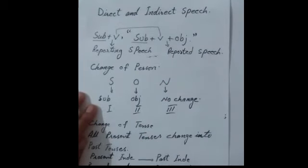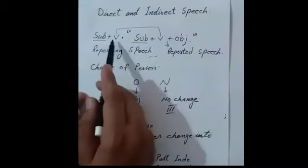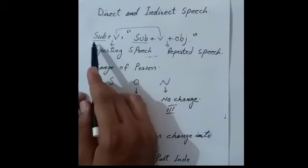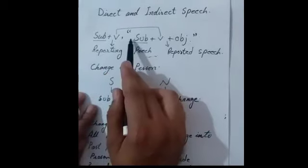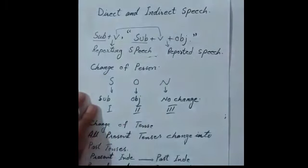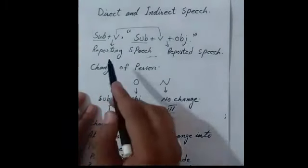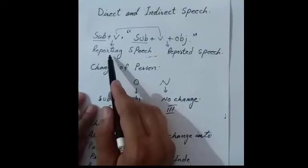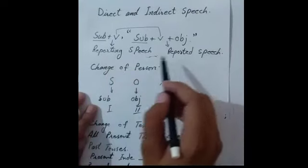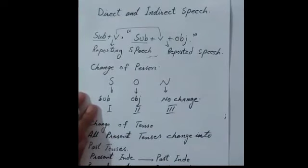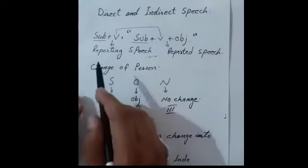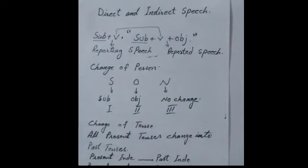We have two parts: the part outside the inverted commas is called the reporting speech, and the part inside the inverted commas is called the reported speech. When we take the exact words of the speaker, that is called direct speech.